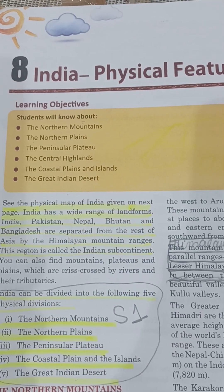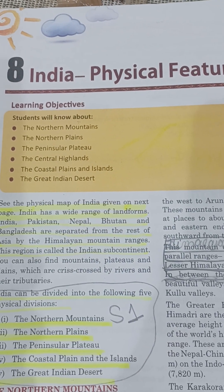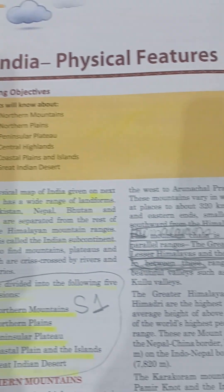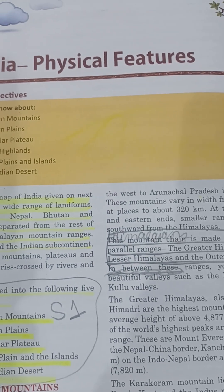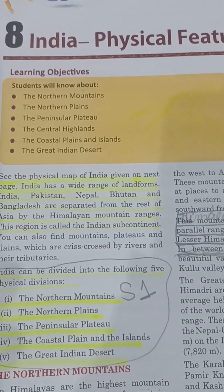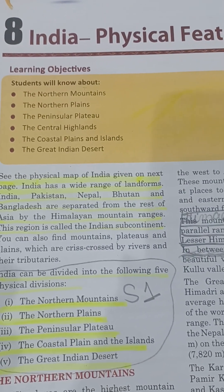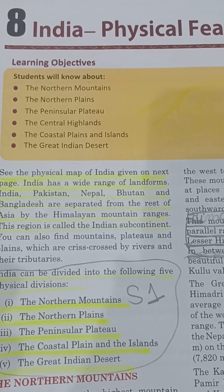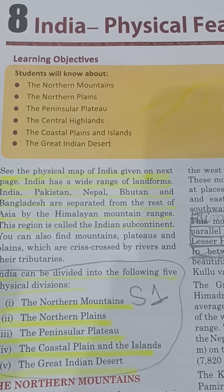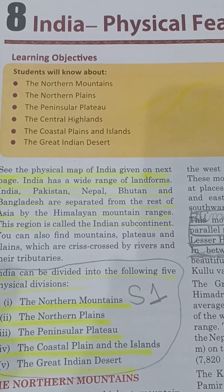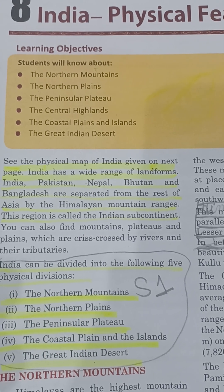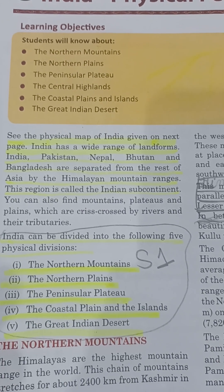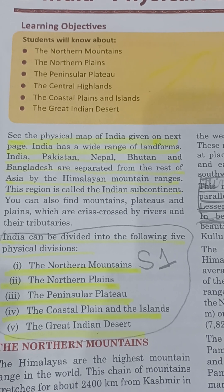Hello students, today we are starting a new chapter in geography — that is Chapter 8, India Physical Features. In this chapter we will learn about the northern mountains, northern plains, peninsular plateau, the central highlands, the coastal plains and islands, and the great Indian desert. So let us start.